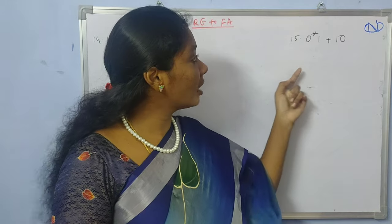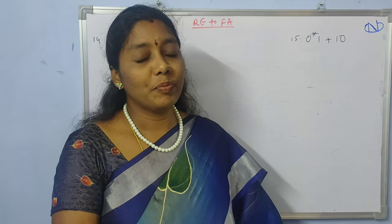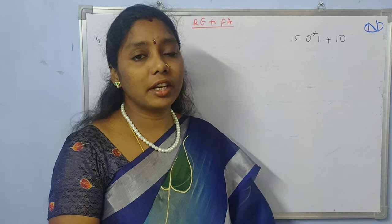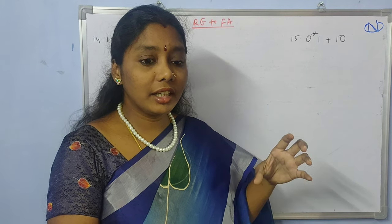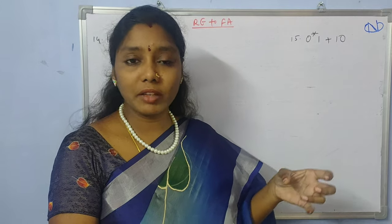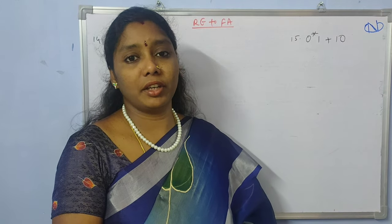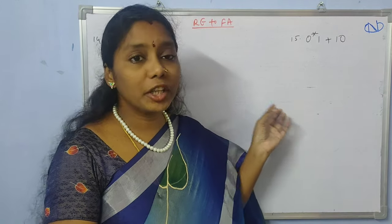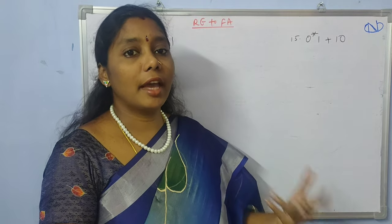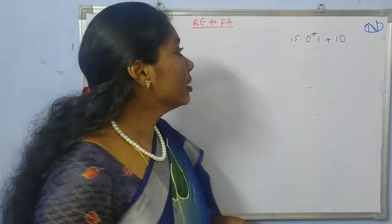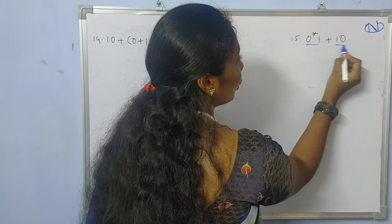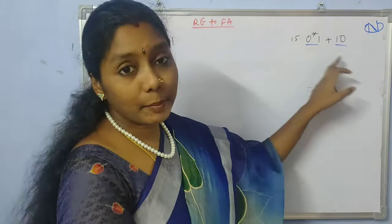Here we have the regular expression 0*1 + 10. As the complexity of the regular expression increases, directly constructing a finite automata from the given regular expression becomes a little difficult. So what we need to do is divide the regular expression into parts as much as possible. Here, just consider this regular expression as two parts — this is like a plus b.